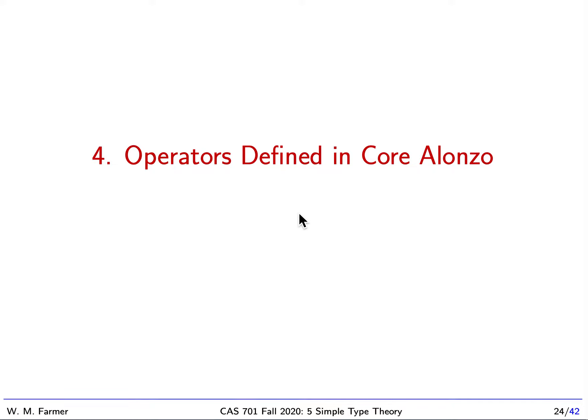Hello again. Welcome to McMaster University course, Computing and Software 701, Logic and Discrete Mathematics. We're continuing today with the topic of simple type theory.